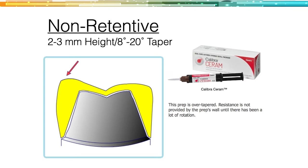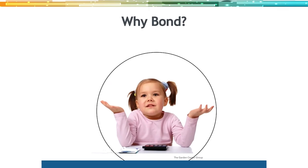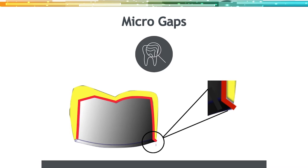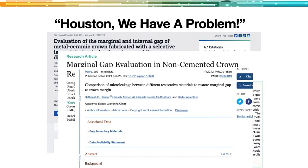Why bond? Because we don't always have an ideal clinical situation — we're not always going to have a retentive crown. We have to understand the micro gap with the materials we're using and fill those micro gaps. It's getting better with lithium disilicate and zirconia, but the micro gap is still pretty large. So in my practice, while I will do some resin-reinforced glass ionomer cementing, the majority of my crowns — whether retentive or non-retentive, lithium disilicate or zirconia — will be bonded.